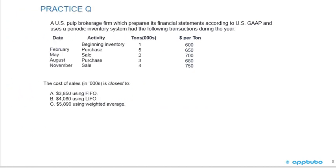Final practice question for this LOS. A U.S. pulp brokerage firm prepares financial statements according to U.S. GAAP, uses a periodic inventory system, and had the following transactions: beginning inventory of 1 ton at $600; February purchase of 5 tons at $650; May sale of 2 tons at $700; August purchase of 3 tons at $680; November sale of 4 tons at $750. The cost of sales in thousands is closest to: A) 3,850 using FIFO; B) 4,080 using LIFO; or C) 5,890 using weighted average.